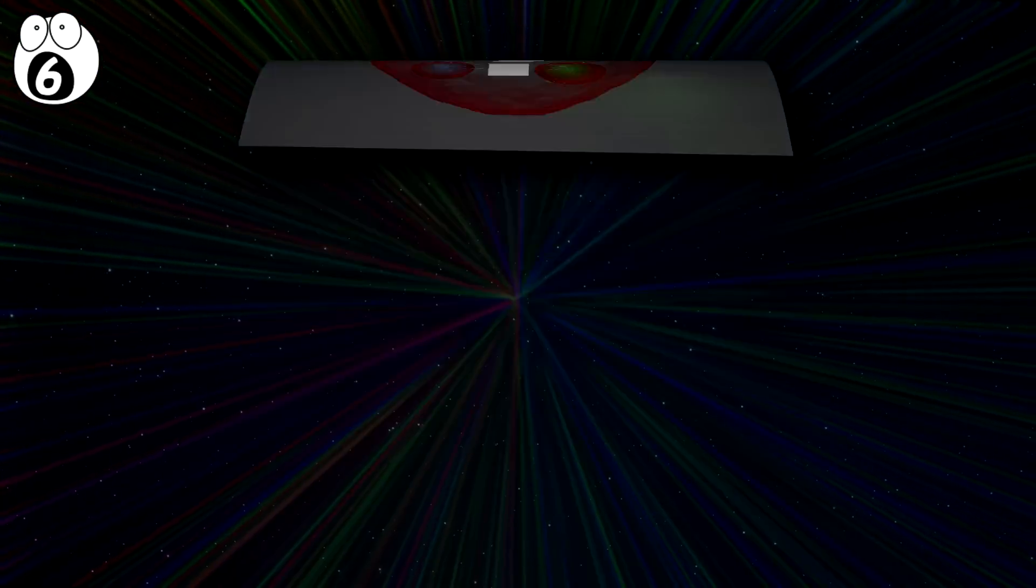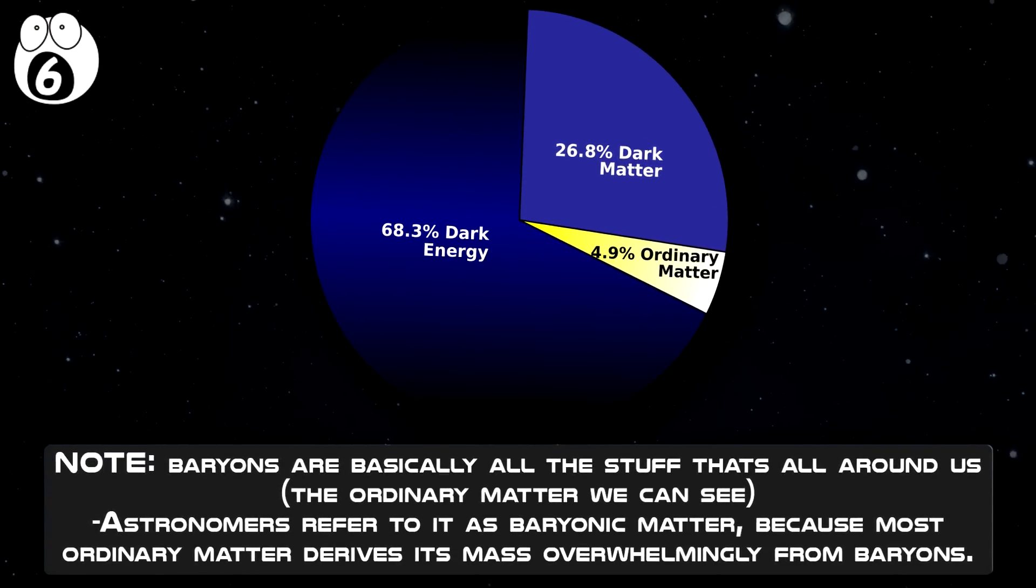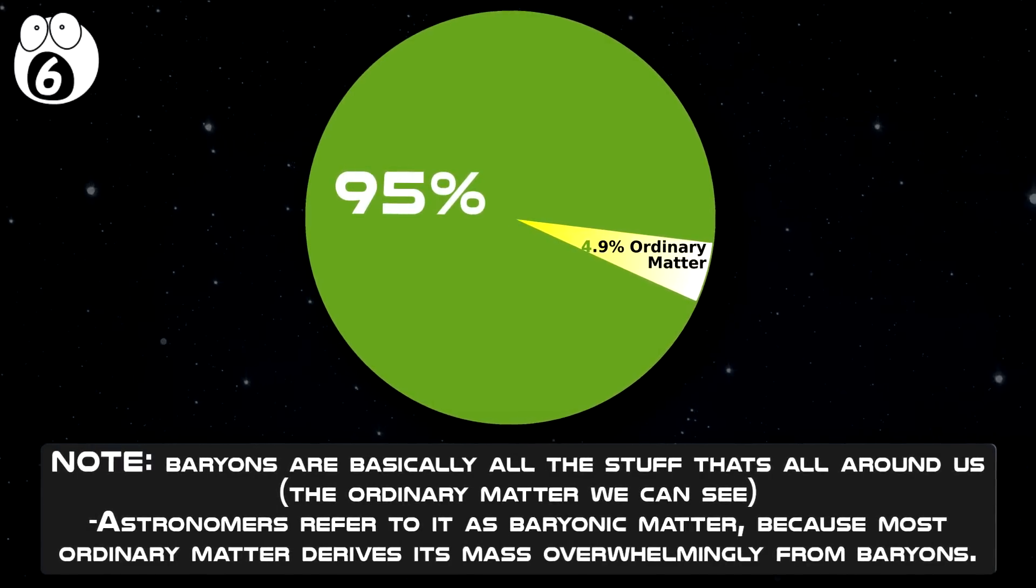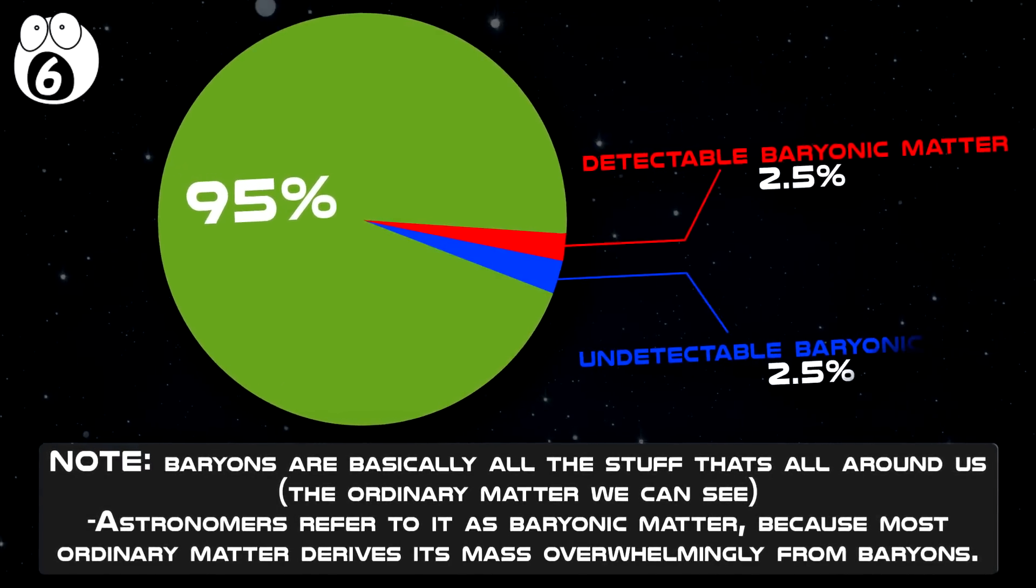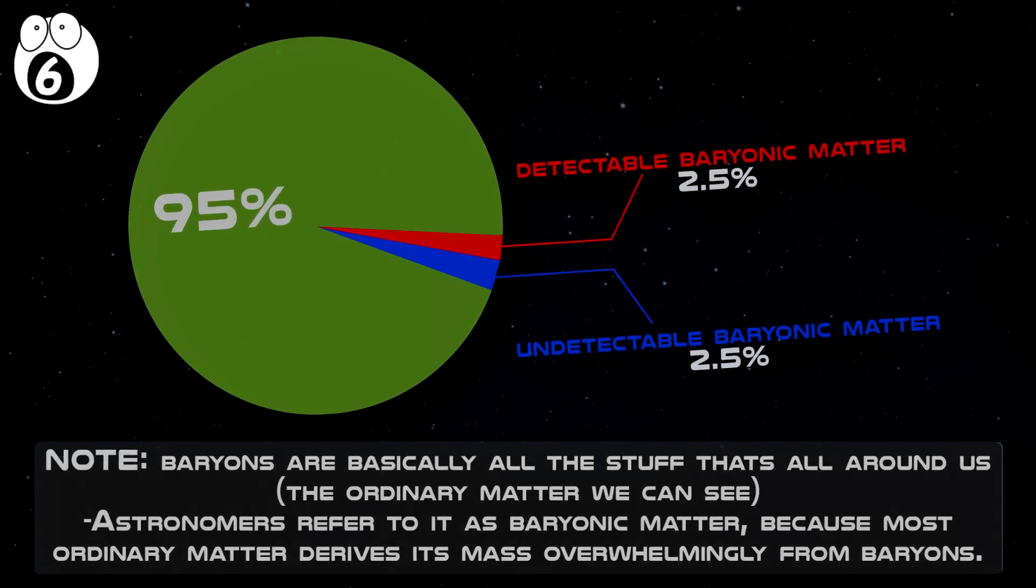When settling down to calculate the composition of our little universe, scientists put their heads together and combined all of the dark matter and dark energy, and they got 95% of the total composition. The remaining detectable baryonic matter only comes up to about 2.5%, leaving 2.5% of baryonic matter unaccounted for.